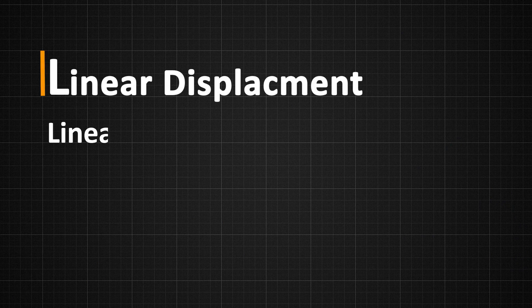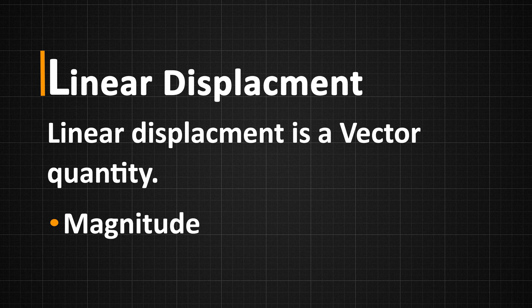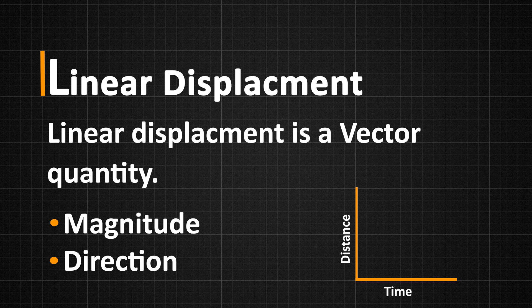Linear displacement is a vector quantity, as it has both magnitude as well as direction. It can be represented graphically by a straight line. In machines, linear displacement is a critical parameter that determines the position and motion of machine components.